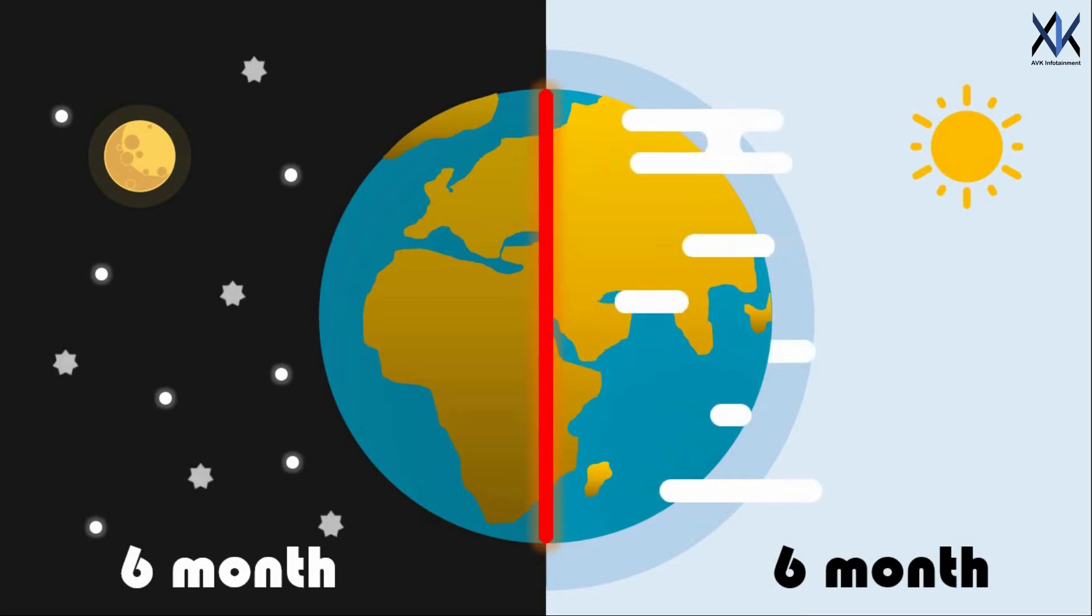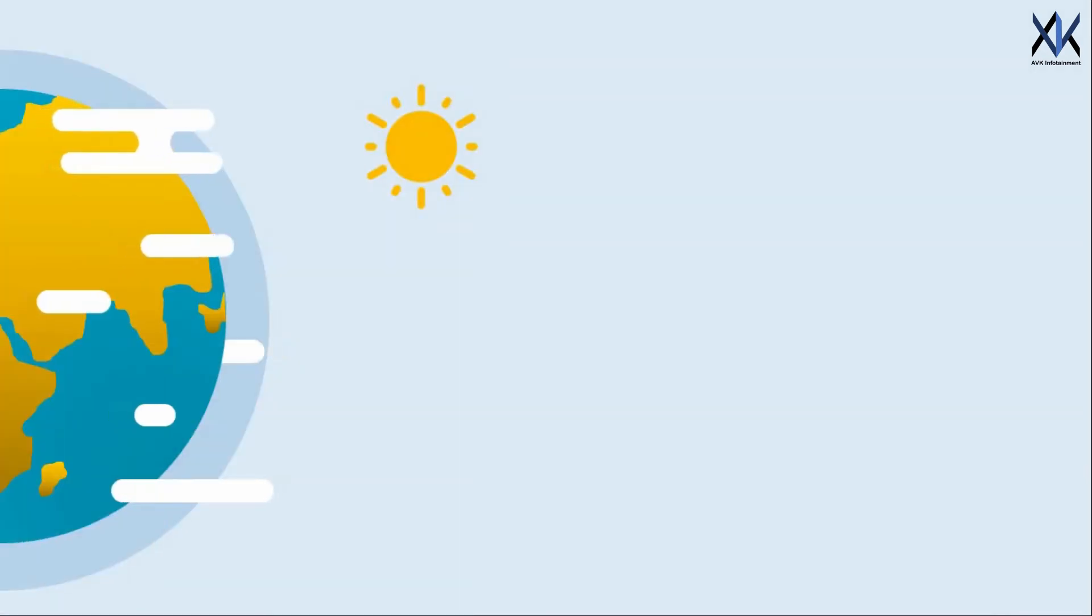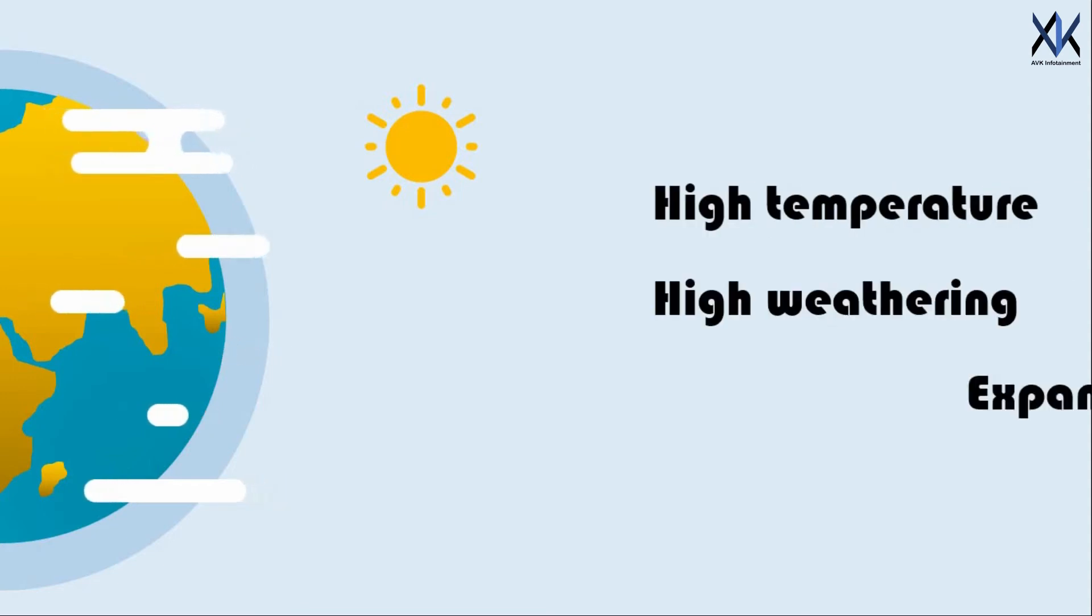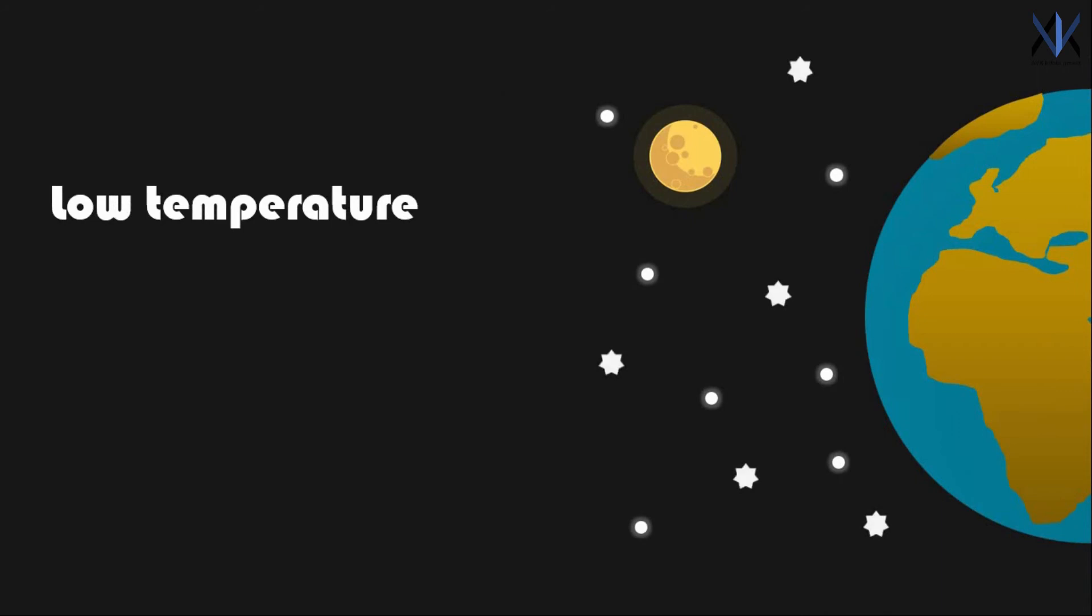On the hot side of the planet, everything will start to erode and the gases will get heated up and expand. Whereas on the cold side, everything will start to freeze. Gases will condense into liquid then into solid.